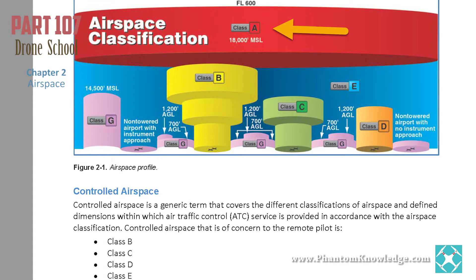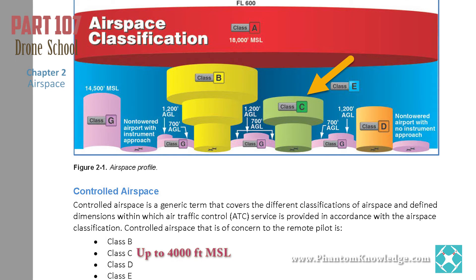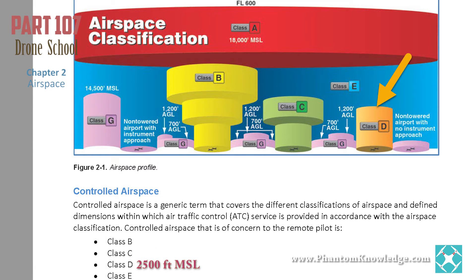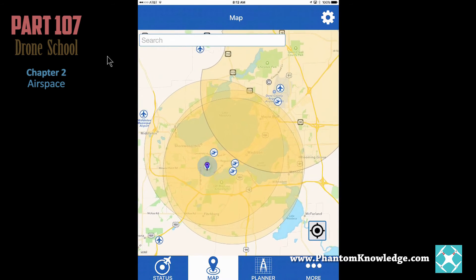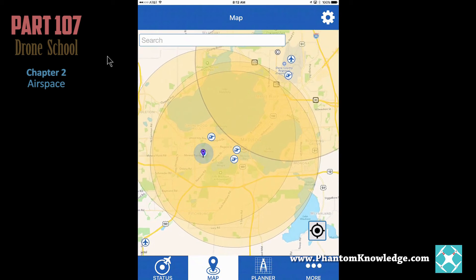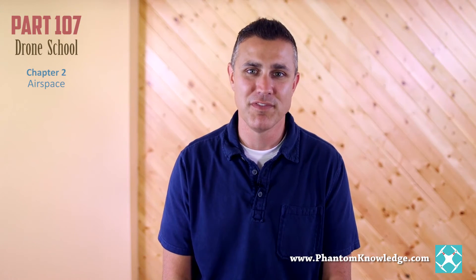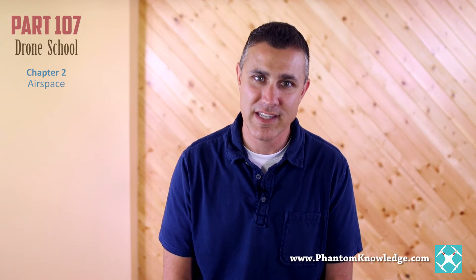Let's review. Class A — you can't get that high. Class B is the big boy on the block at the busiest airports in the world; it's a wedding cake with multiple tiers and usually extends up to 10,000 feet MSL. Class C is similar and extends up to 4,000 feet, and Class D is just a column which extends up to 2,500 feet. The FAA Know Before You Fly app will tell you which class of airspace you're in. What I want you to really take away from this is: number one, use a resource such as the app to know which airspace you're in; and number two, remote pilots must have permission from ATC before flying into Class B, C, or D airspace.